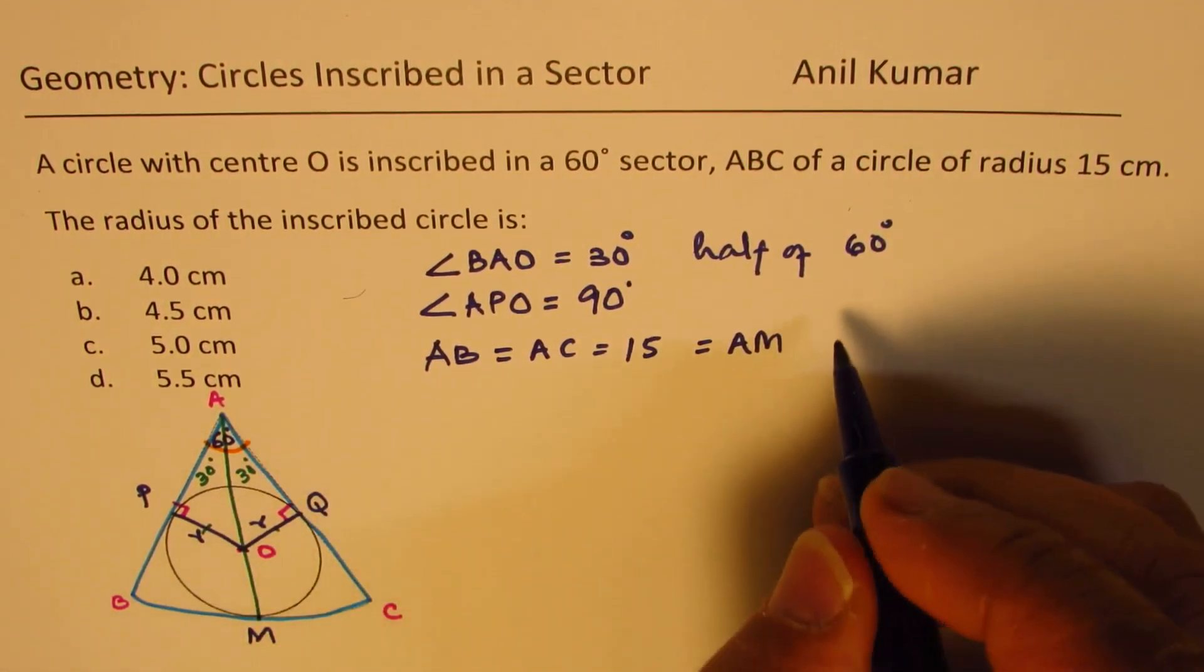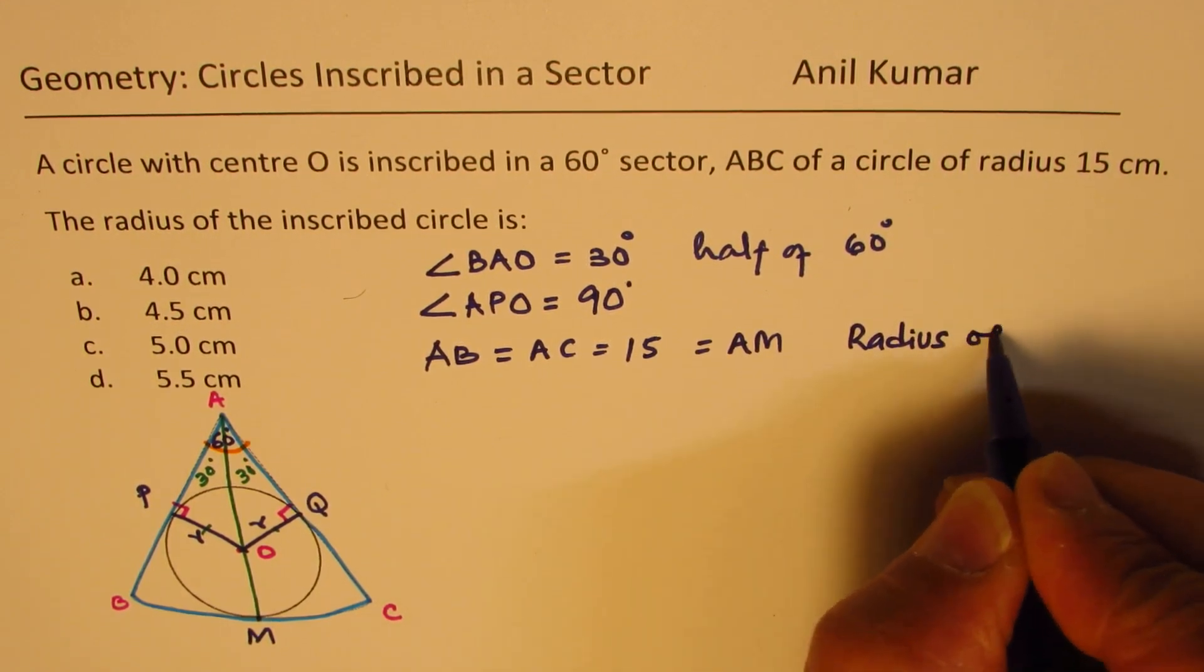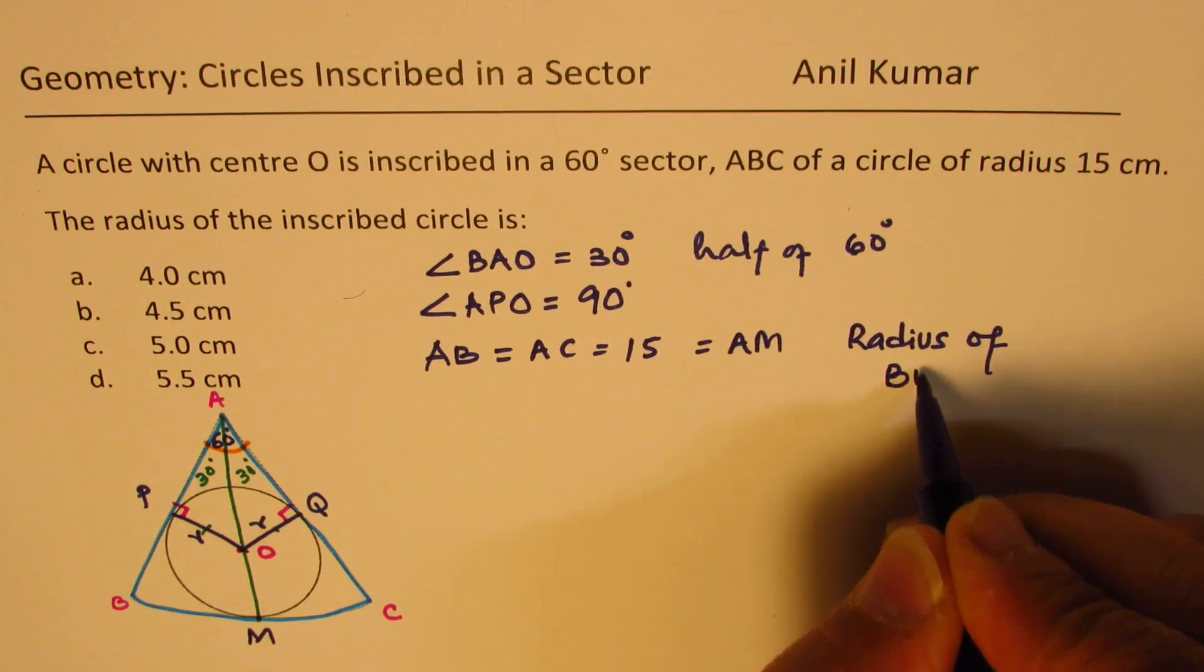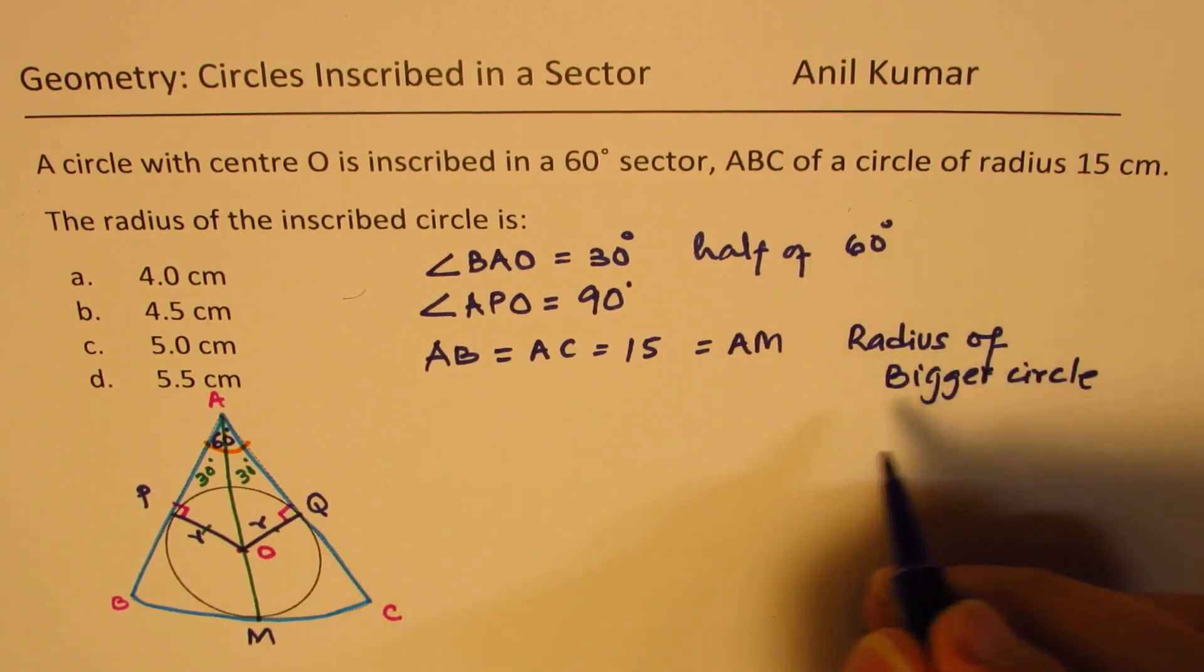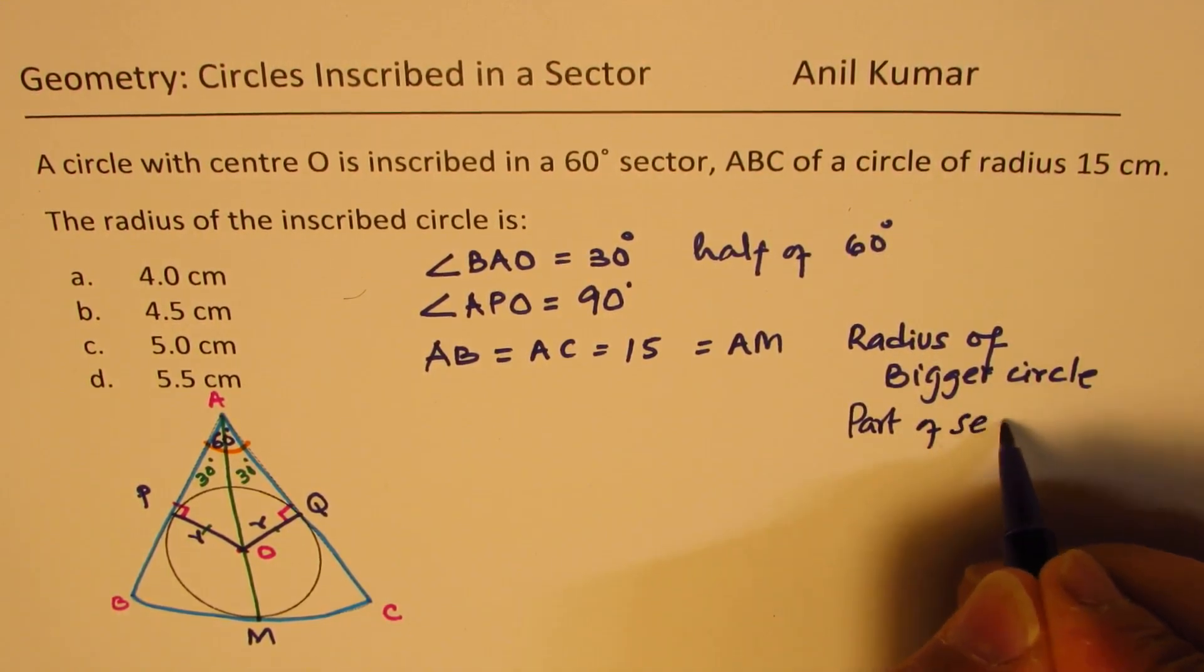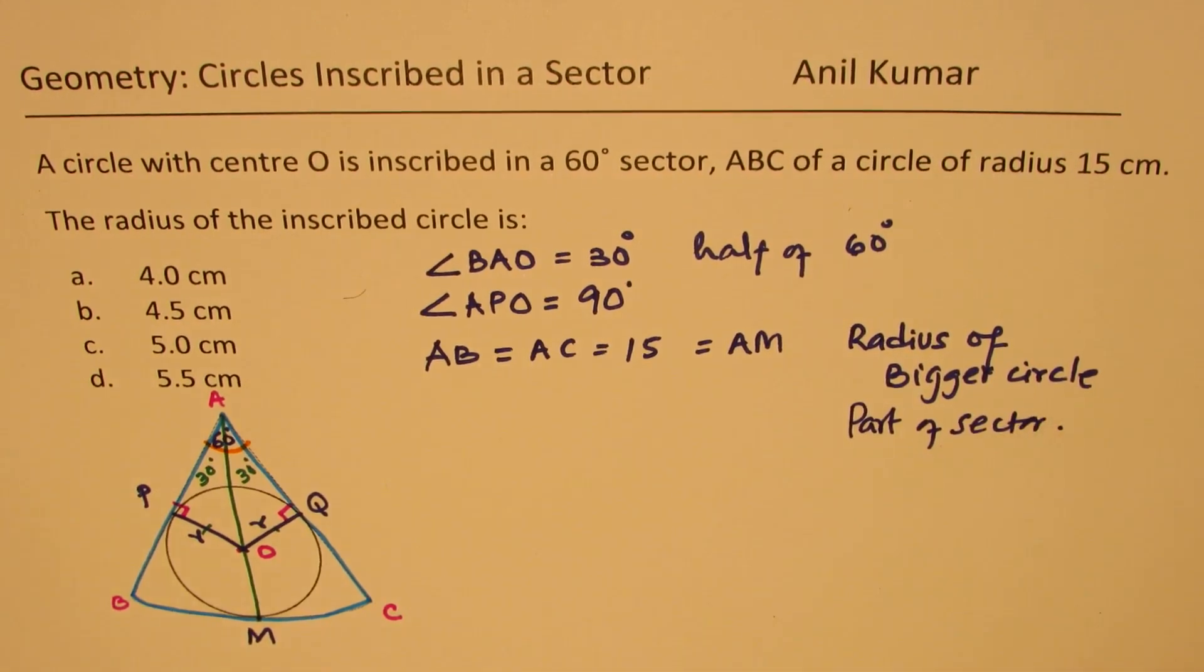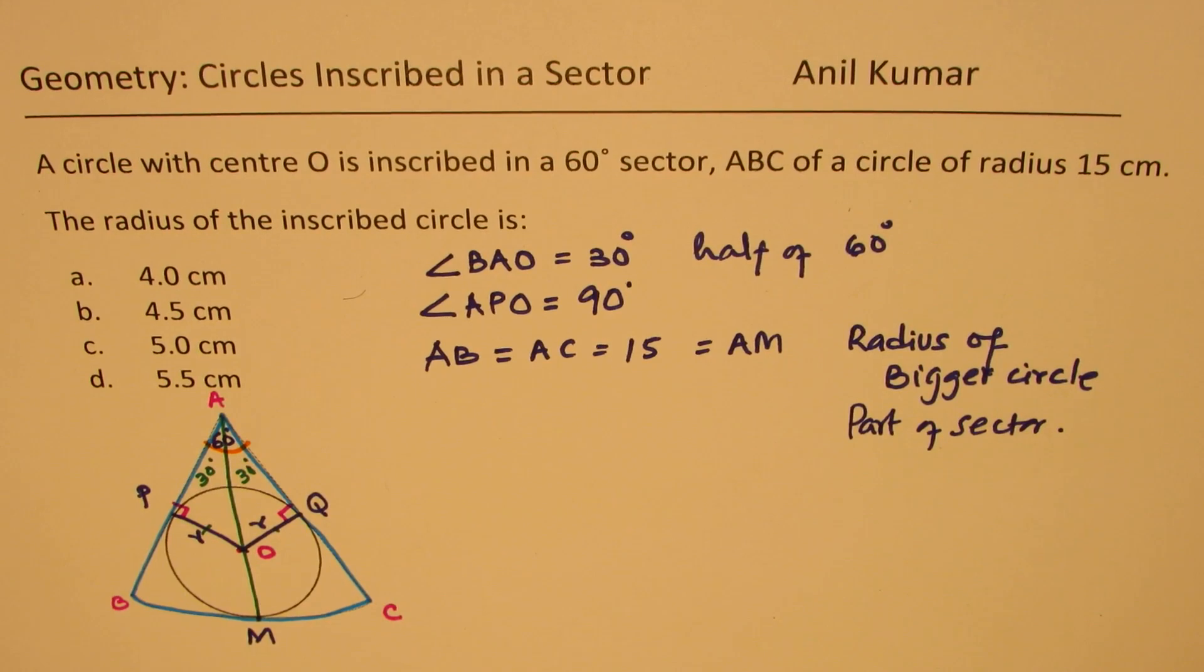So that is the radius of bigger circle. Or you can say part of sector. So A to M is also 15.